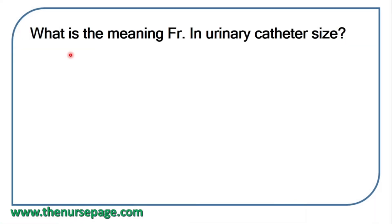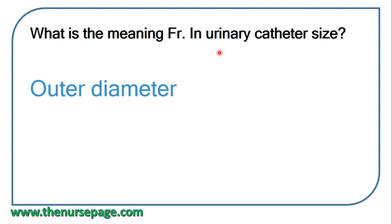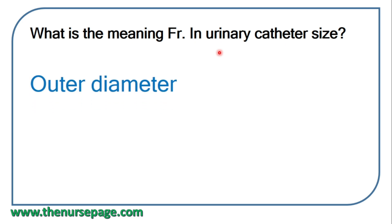Next question: what is the meaning of FR in urinary catheter size? FR means French, and it indicates the outer diameter of the urinary catheter.